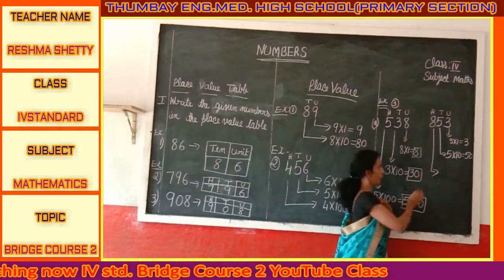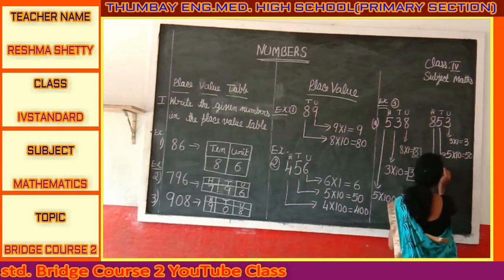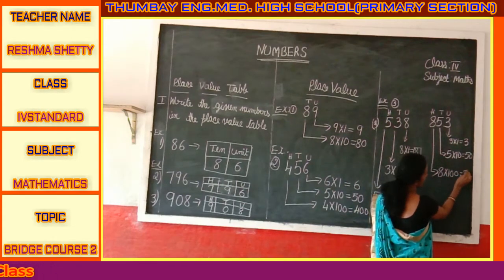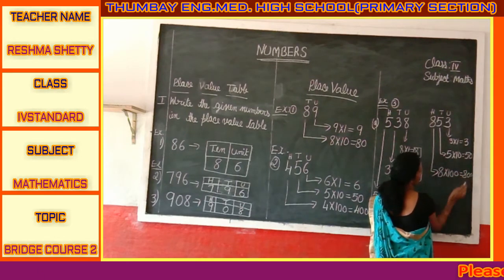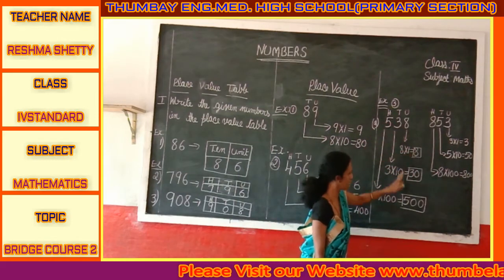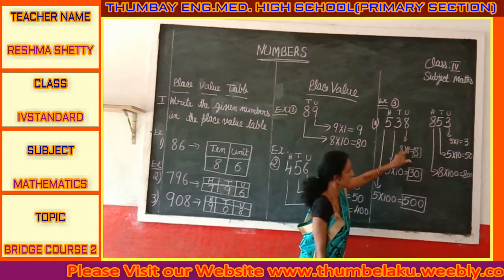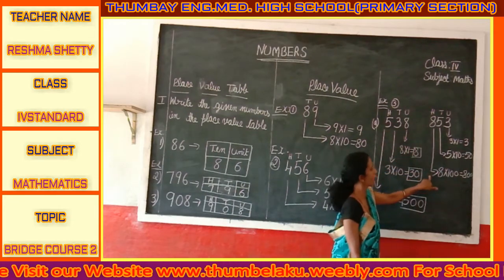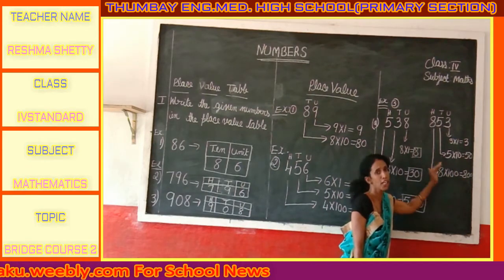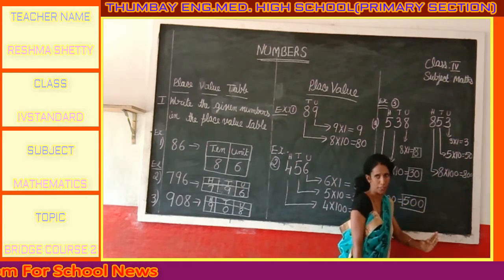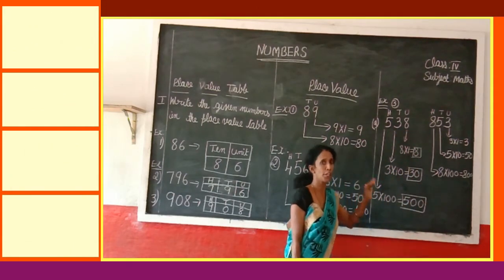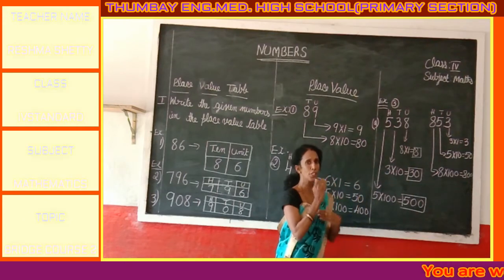And 8 is in the hundreds place, so 8 multiplied by 100 equals 800. Now see the difference. The digit 8 is the same, but its place value keeps changing depending on its position. The place value keeps changing because the position changes. Where the number is placed is very important.